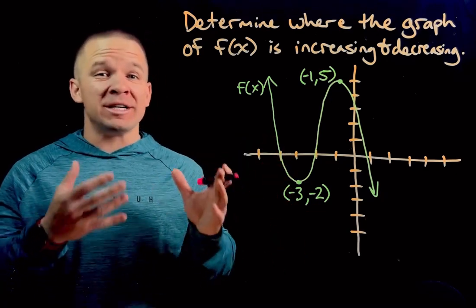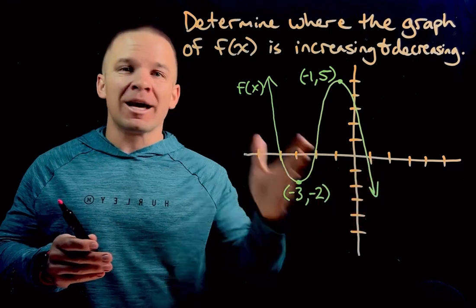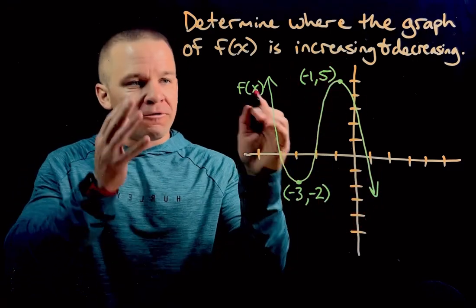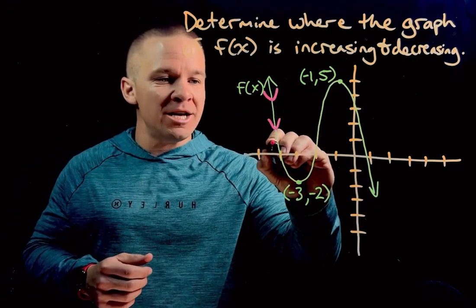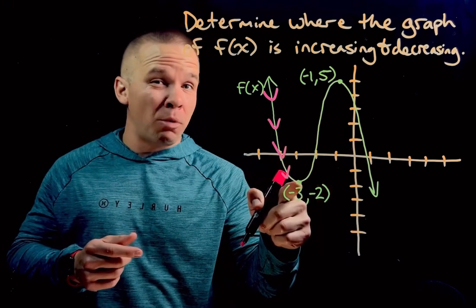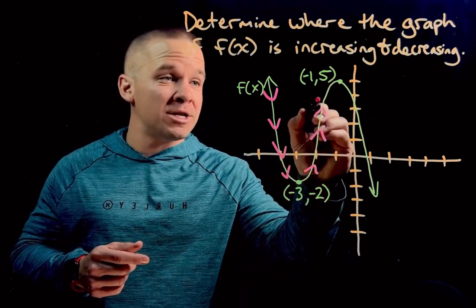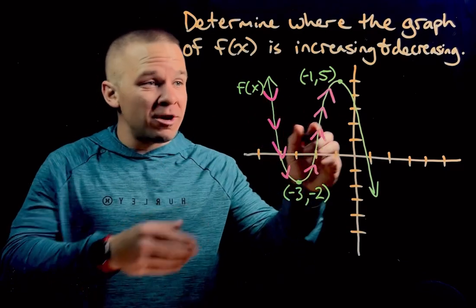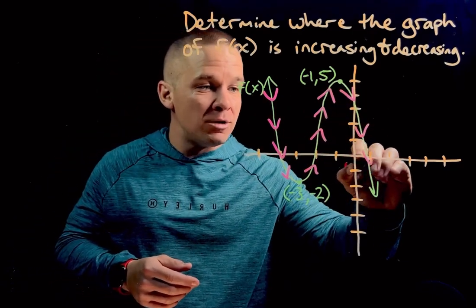For intervals of increasing and decreasing, we need to think about this graph from left to right, kind of like a roller coaster. So the first part here we are decreasing until we get to this point, then it's going to turn and we're going to go into an increasing mode. Then we're going to turn again and we're going to head back to decreasing.